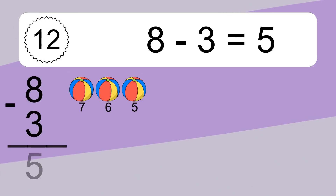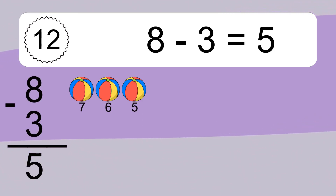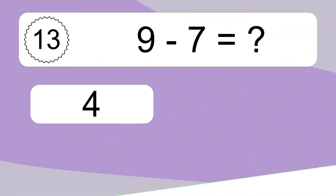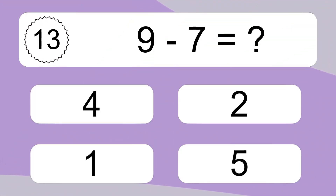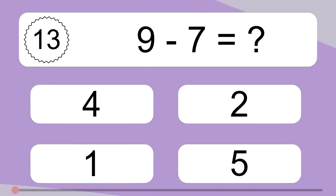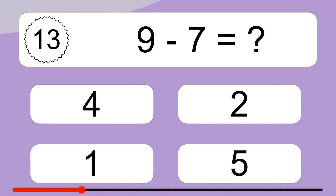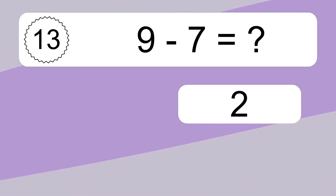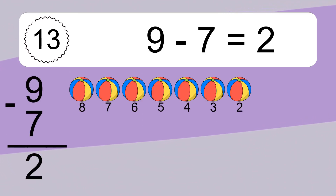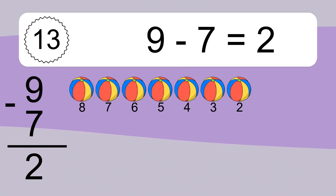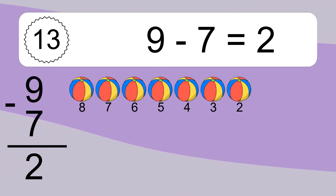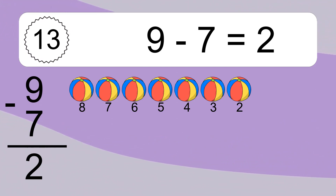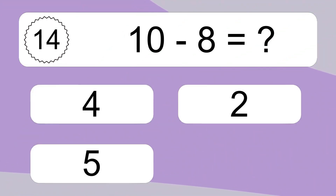8 minus 3 equals 5. Let's count it: 7, 6, 5. 9 minus 7 equals what? 9 minus 7 equals 2. Let's count it: 8, 7, 6, 5, 4, 3, 2. 10 minus 8 equals what?